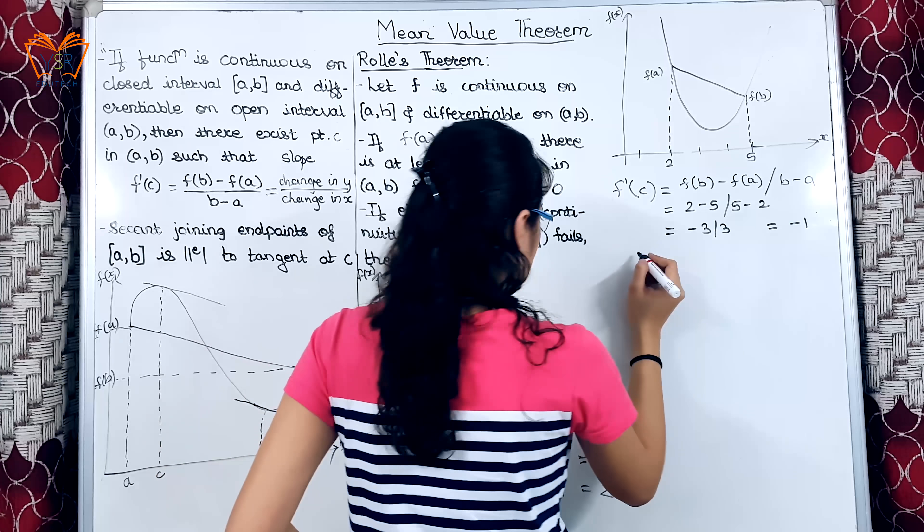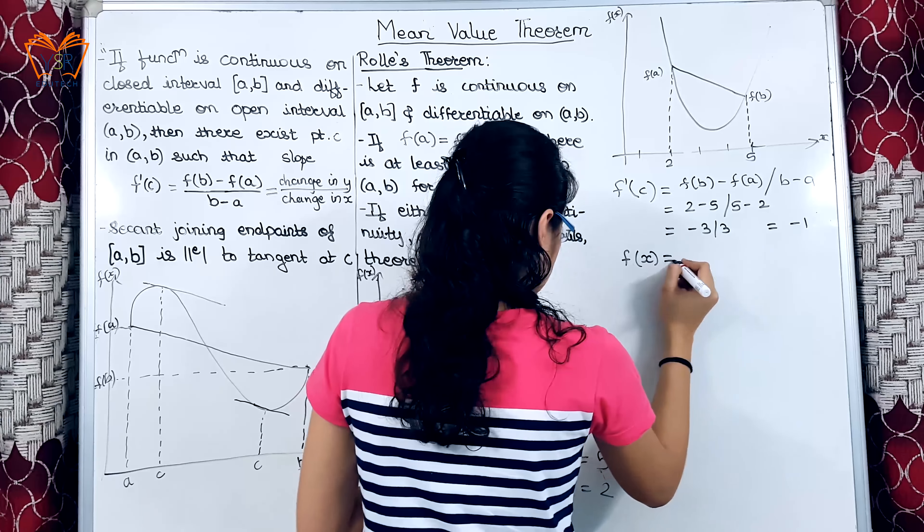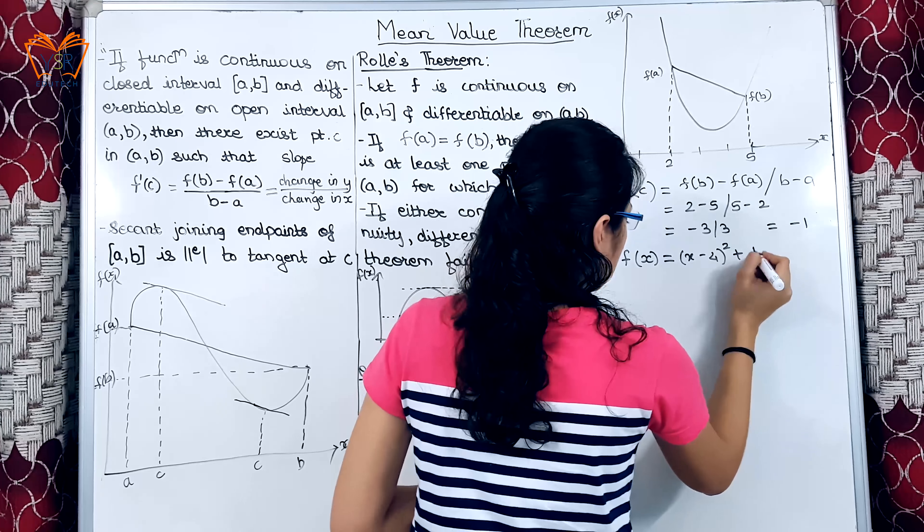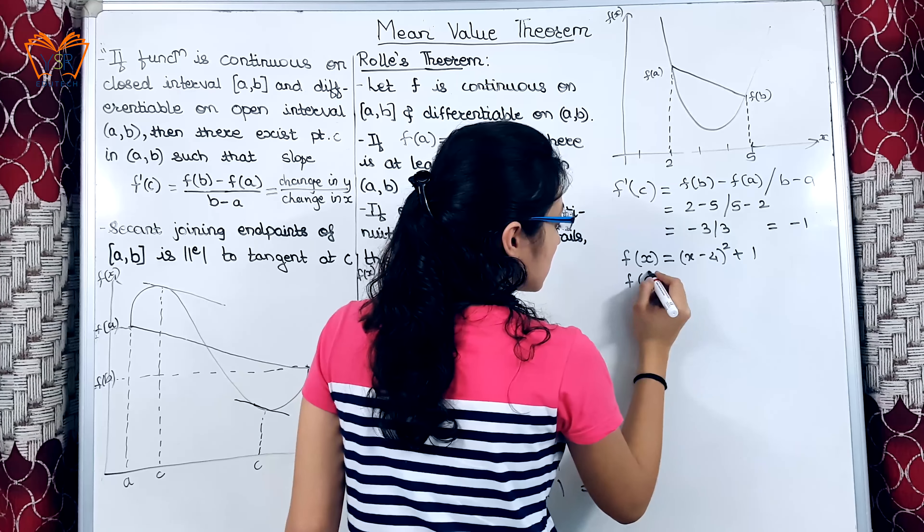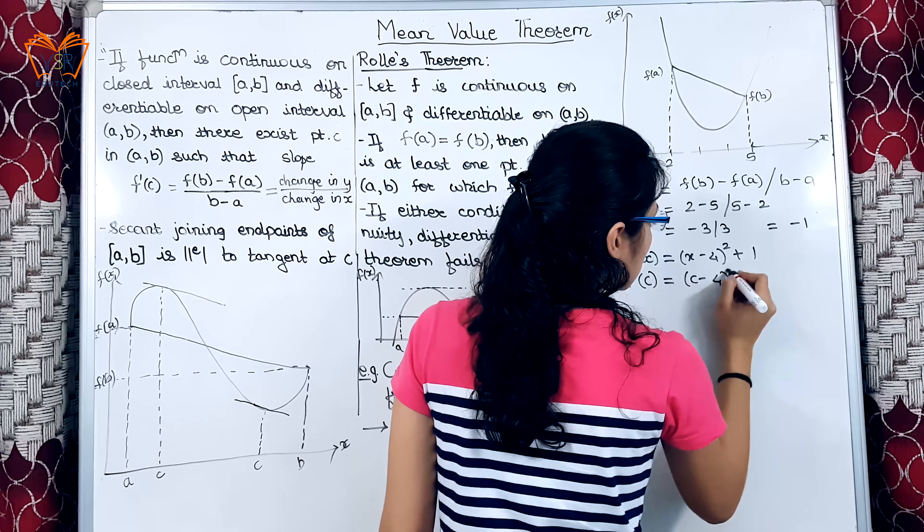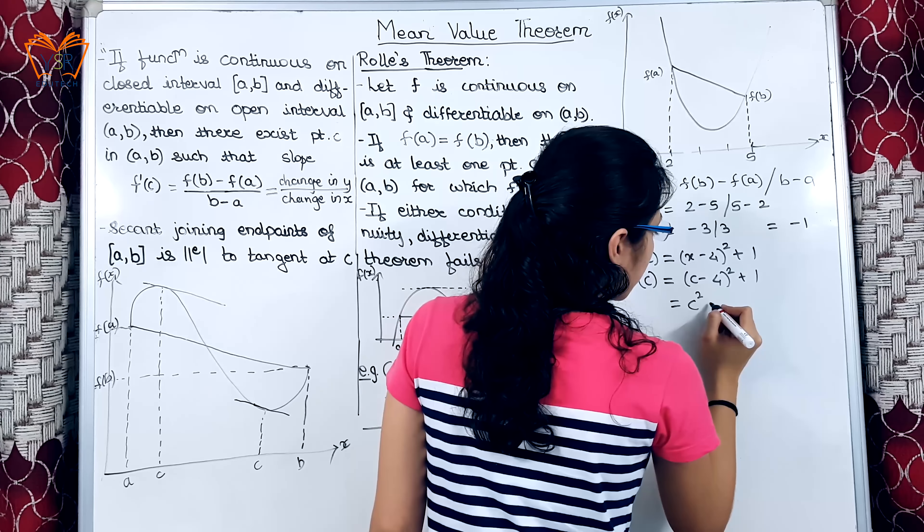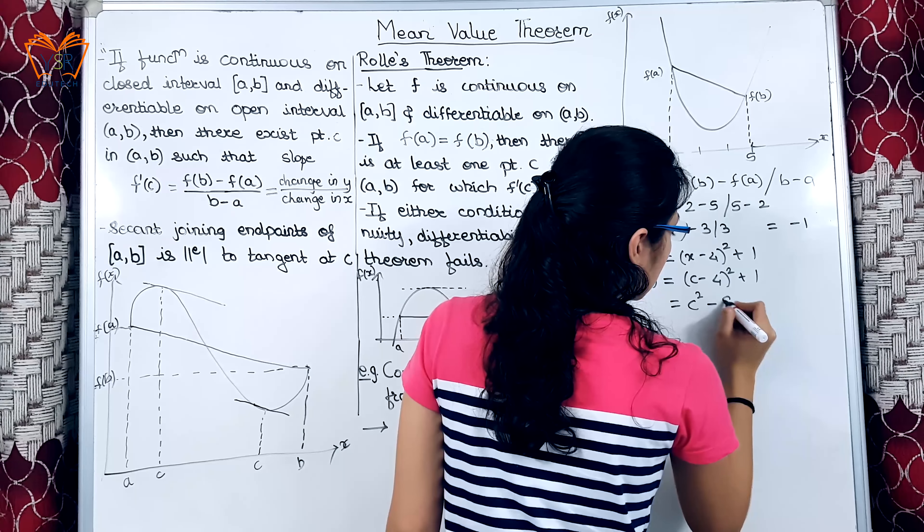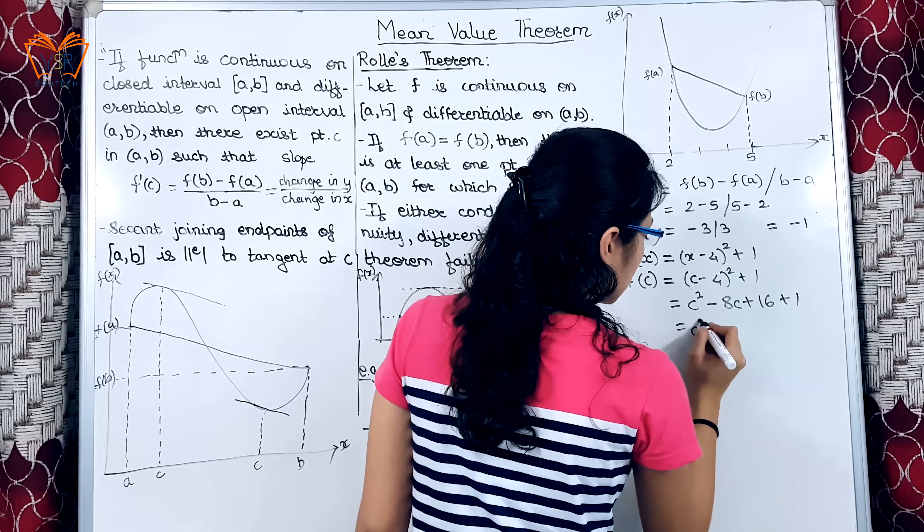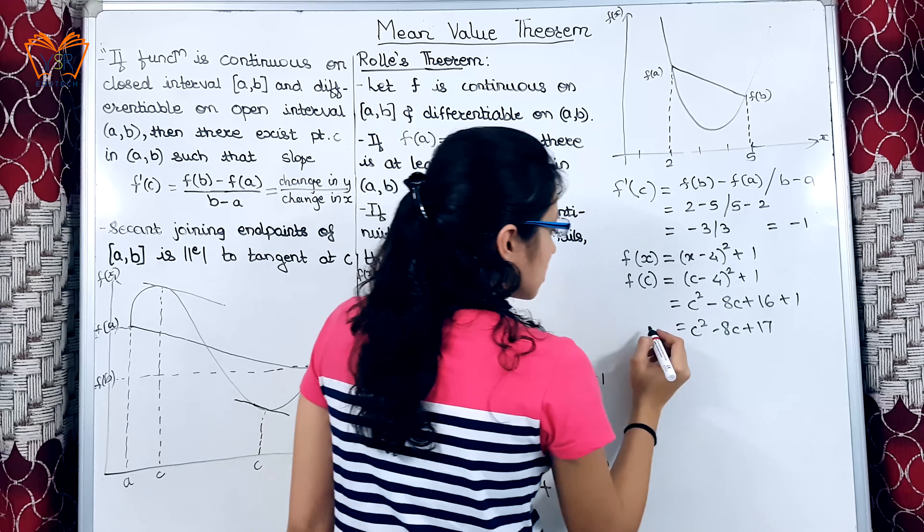So, the value of f'(c) is -1. We will substitute this value in our equation f(x) = (x-4)² + 1. So, instead of x substitute c, we will get (c-4)² + 1. This is c² - 8c + 16 + 1. This gives + 17.